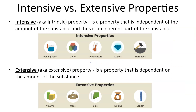In addition to chemical versus physical, there is another classification: intensive versus extensive. An intensive property, also known as an intrinsic property, is independent of the amount of the substance and is therefore inherent to it. For example, boiling point — water under normal atmospheric pressure (one atmosphere) boils at 100°C, and that is inherent to water no matter how much you have.